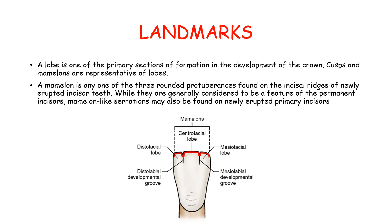A lobe is one of the primary sections of formation in the development of the crown; cusps and mamelons are representative of these lobes. A mamelon is any one of the three round protuberances found on the incisal ridges of newly erupted incisor teeth. While generally considered a feature of only permanent incisors, mamelon-like serrations may also be found on newly erupted primary incisors. They can be seen only in newly erupted incisors.